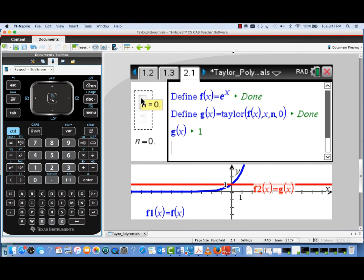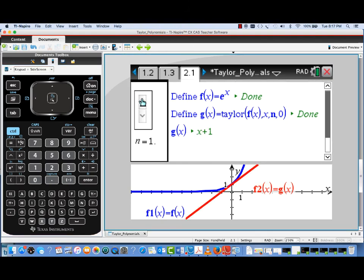As I change the degree to one, I get the tangent line approximation, and notice that we actually have an update to the formula for G of X shown here. So we actually have the formula for the tangent line approximation.